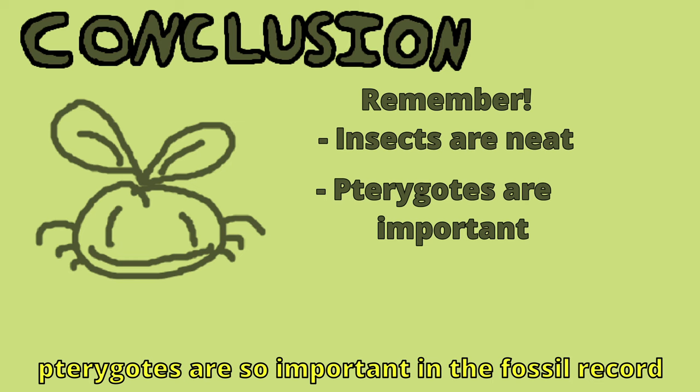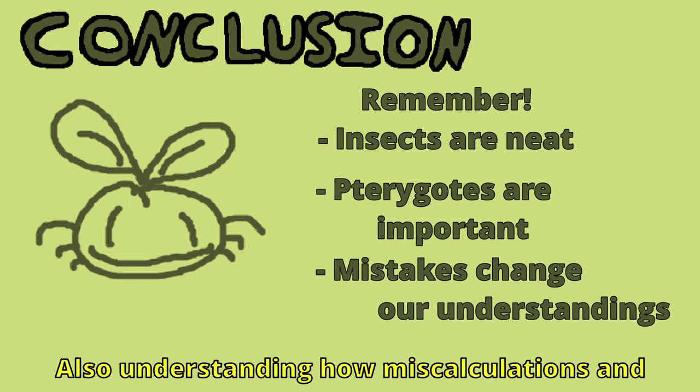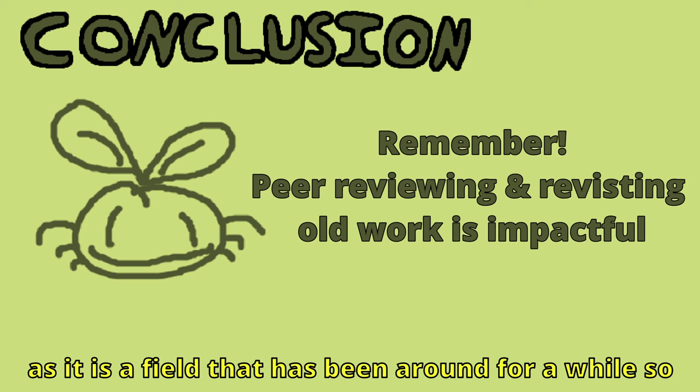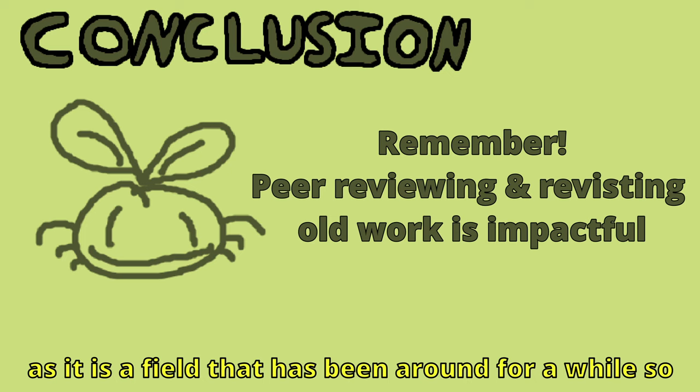I'll start wrapping things up now. I hope you've learned something here about insects, but hopefully I've explained why Pterygotes are so important in the fossil record with how revolutionary their unique trait is. Also, understanding how miscalculations and misinterpretations have skewed the general understanding of them — which not only applies here but to all of paleontology. With this, I hope I have made it clear that we should be more aware about double-checking paleontological work in general, as it is a field that has been around for a while, so significant mistakes caused by human or equipment error are bound to be prevalent. Anyway, that's that for this video. Thank you for watching.